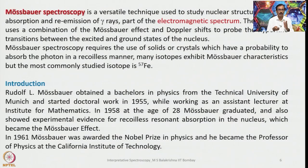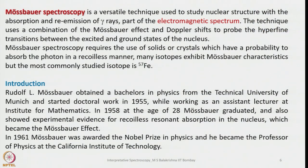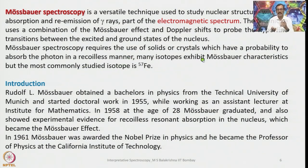This is the background for Mössbauer spectroscopy. Mössbauer spectroscopy is a versatile technique used to study nuclear structure with absorption and re-emission of gamma rays, which are part of the electromagnetic spectrum at the high-energy end. The technique uses a combination of the Mössbauer effect and Doppler shift to probe the hyperfine transitions between the excited and ground state of the nucleus. Mössbauer spectroscopy requires the use of solids or crystals, which have a probability of absorbing the photon in a recoil-free manner. Many isotopes exhibit Mössbauer characteristics, but the most commonly studied isotope is iron-57.